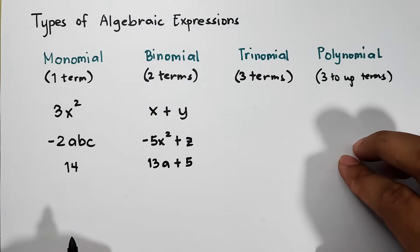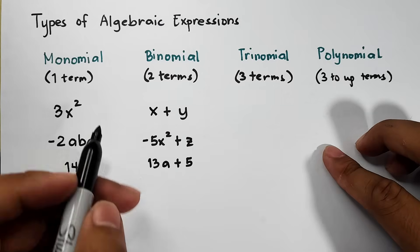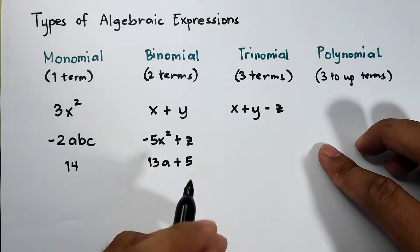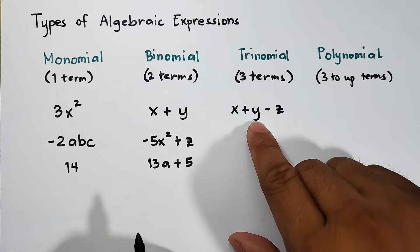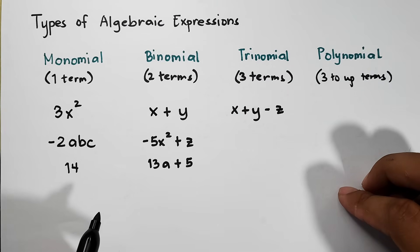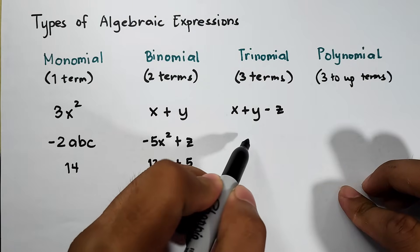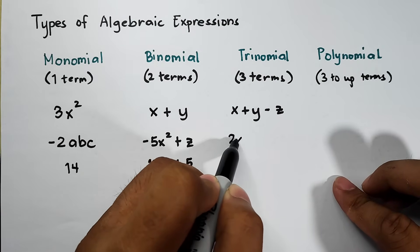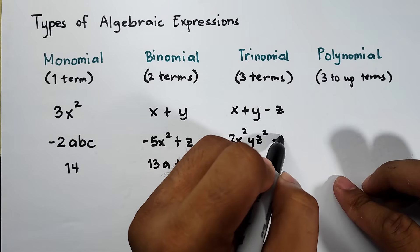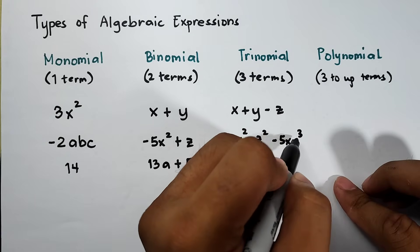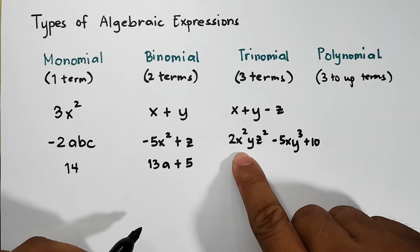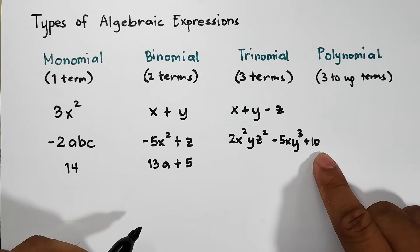For the trinomial, we have 3 terms. For example: x plus y minus z. This one is a trinomial — 1, 2, 3 — separated by addition or subtraction. Another example: 2x squared yz squared minus 5xy cubed plus 10. This one is also a trinomial — 1, 2, and 3.